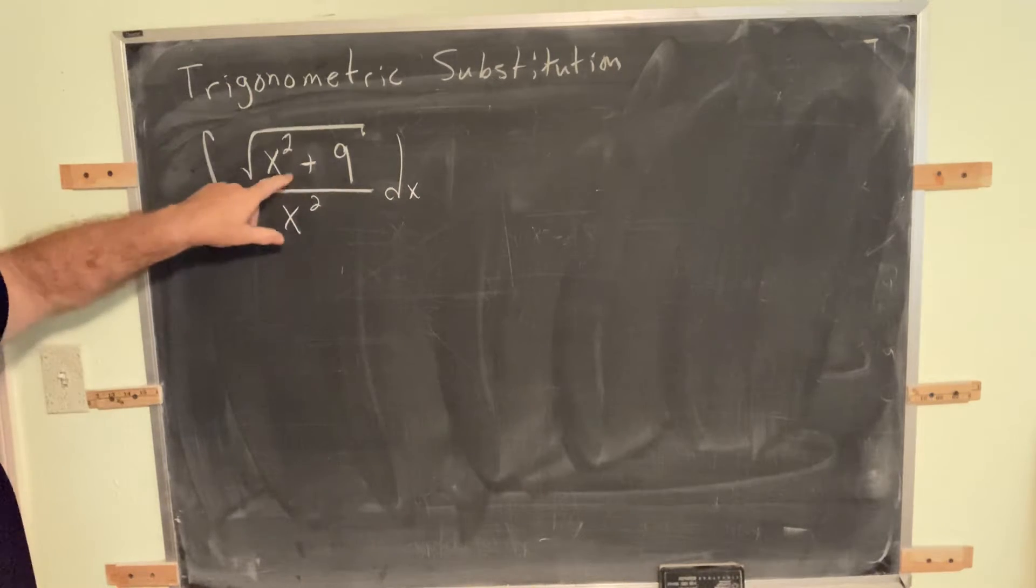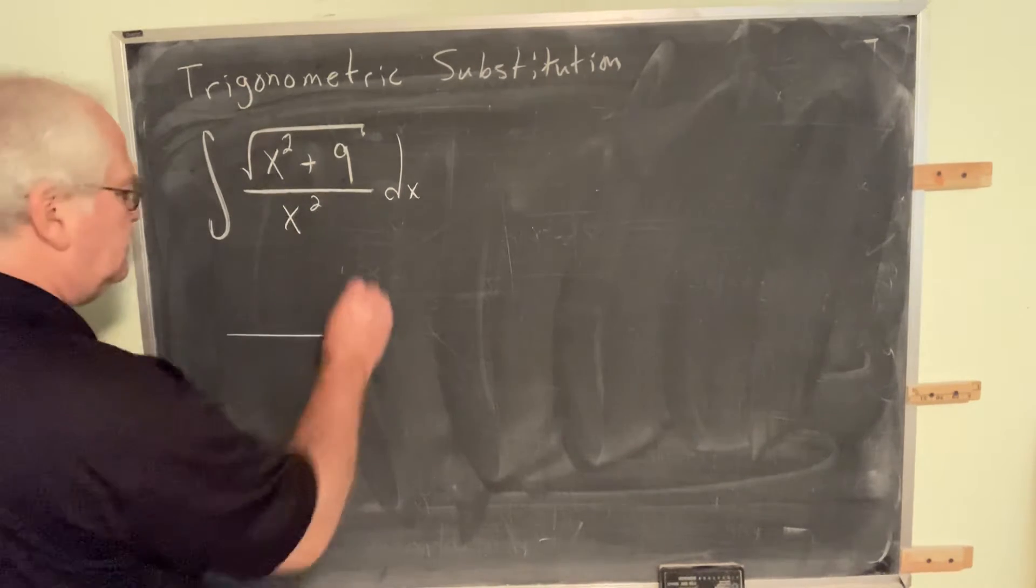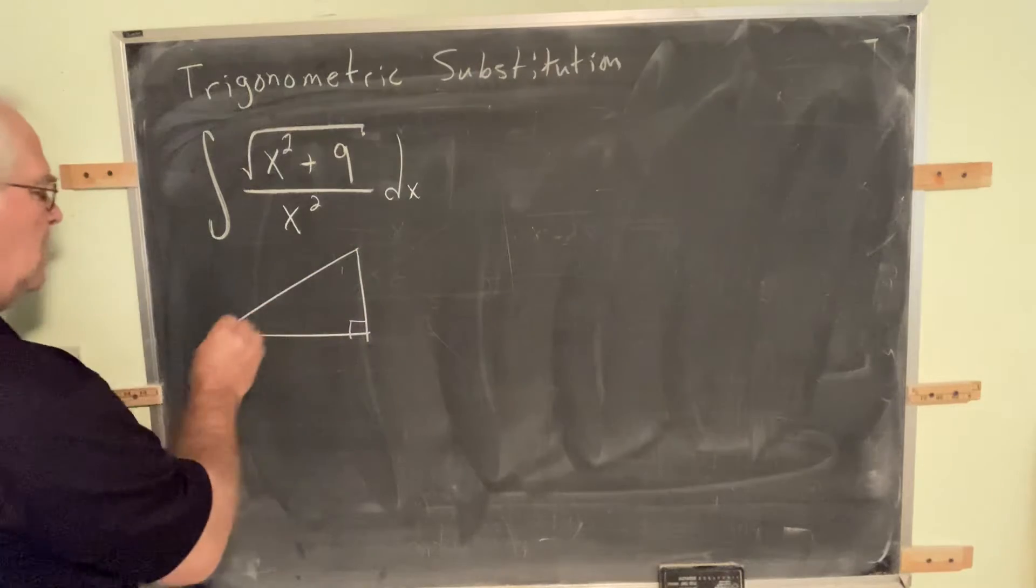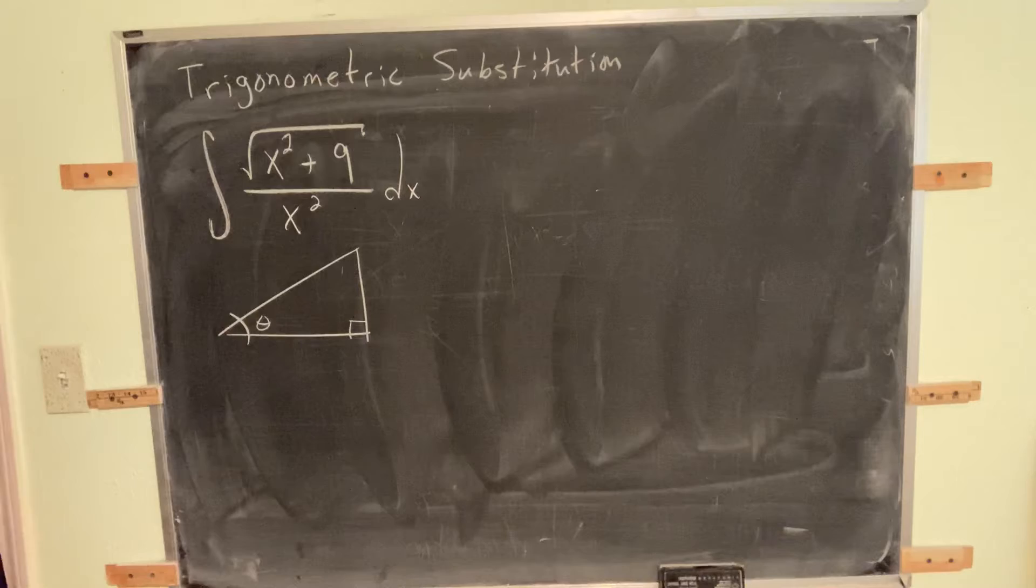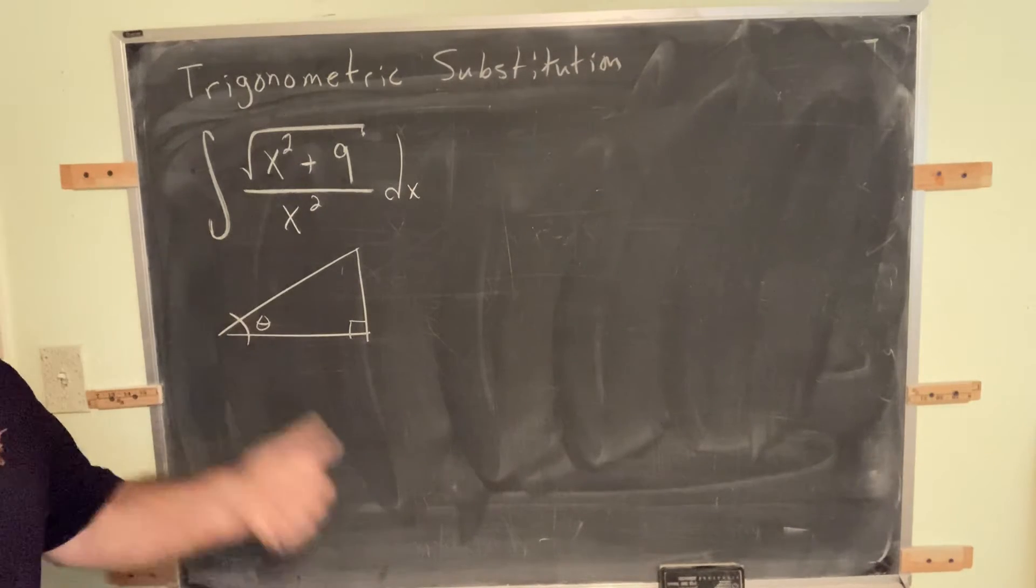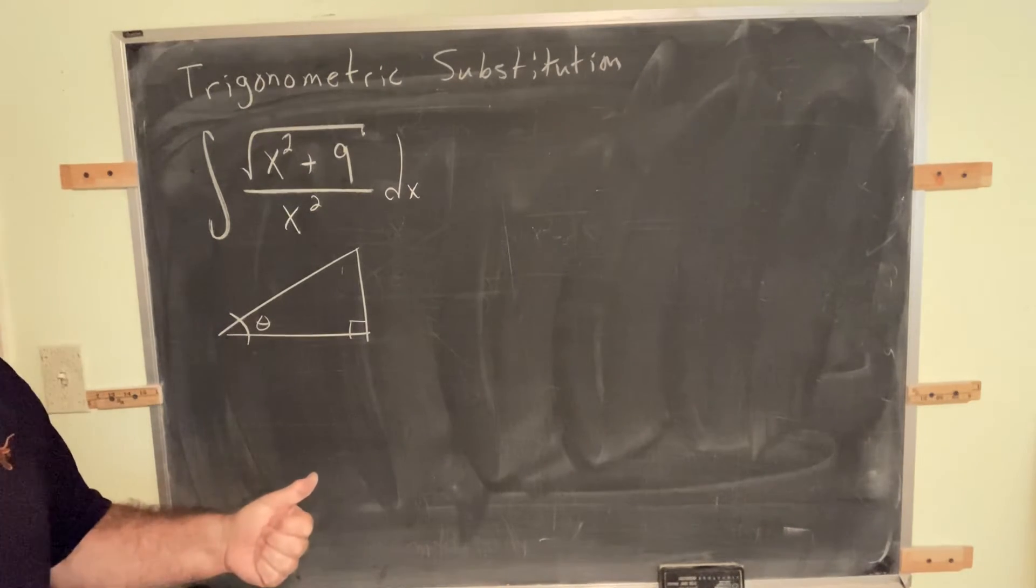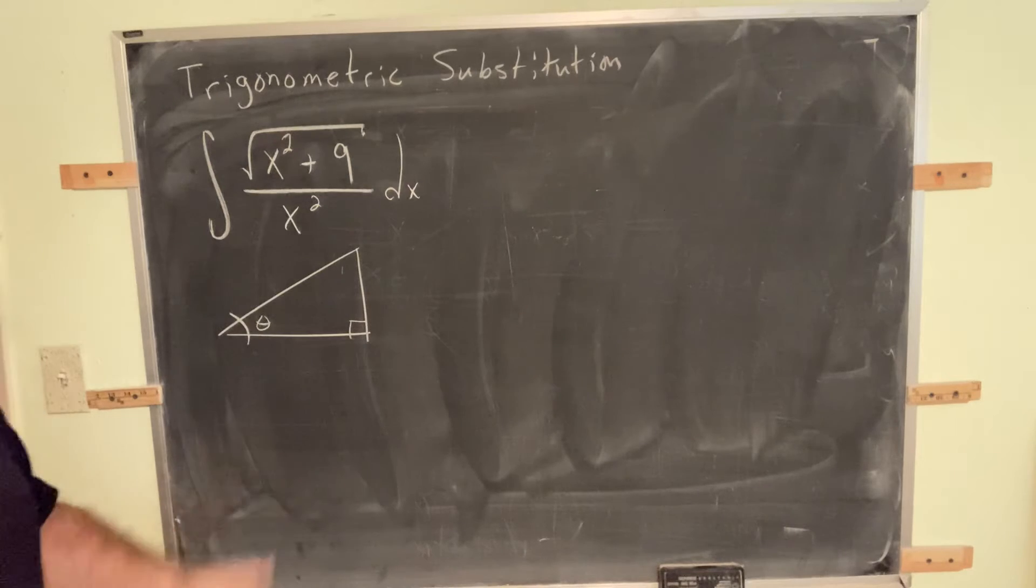So now the question is, how do we label the right triangle? Always put theta in the lower left. Always label the hypotenuse first. So what are our rules? Number one, label the hypotenuse first. Always label hypotenuse first.